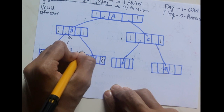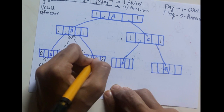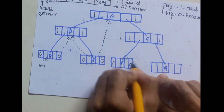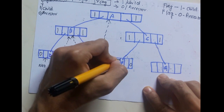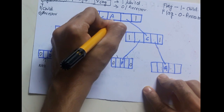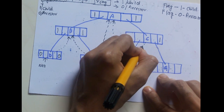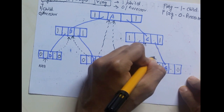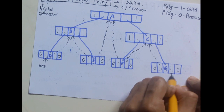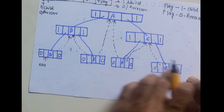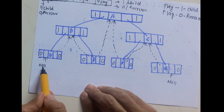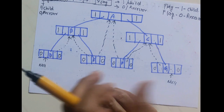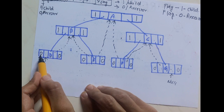The left pointer of E holds the address of its in-order predecessor B, and the right pointer holds the address of its in-order successor A. Node F has no children, so flag is 0. The left pointer of F holds its in-order predecessor A, and the right pointer holds its in-order successor C. Node G has no children, so flag is 0. The left pointer of G points to its in-order predecessor C, and the right pointer is null. The left pointer of D also has no in-order predecessor, so its flag is 0.